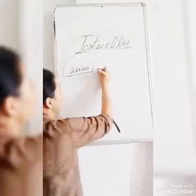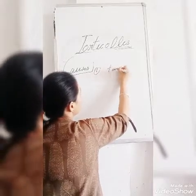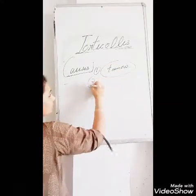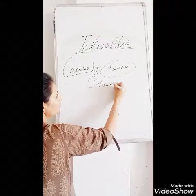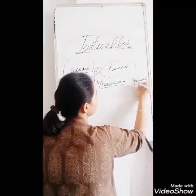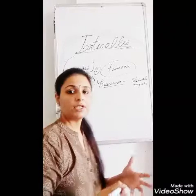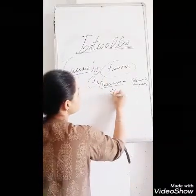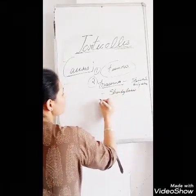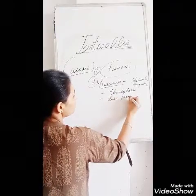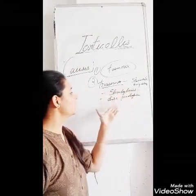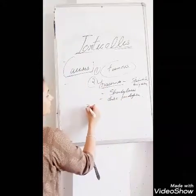The causes or etiology — the reasons behind torticollis could be the presence of a tumor. A sternocleidomastoid muscle tumor or cyst can occur. Trauma could also be a reason, leading to spinal injury, spondylosis, or disc prolapse. So trauma can lead to spinal injury, disc prolapse, or spondylosis — these could all be contributing factors.